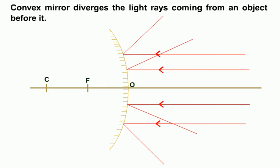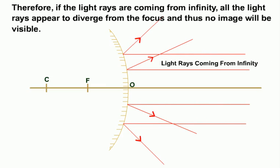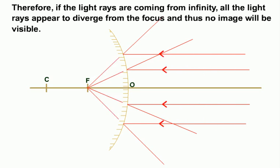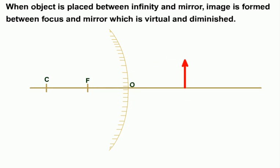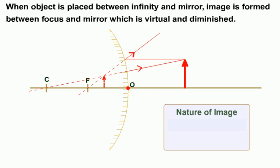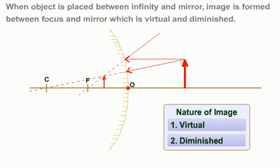Students, a convex mirror diverges the light rays coming from an object. Therefore, if the light rays are coming from infinity, all the light rays appear to diverge from the focus and thus no image will be visible. When an object is placed between infinity and the mirror, an image is formed between the focus and mirror which is virtual and diminished.